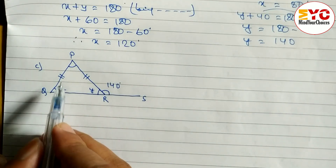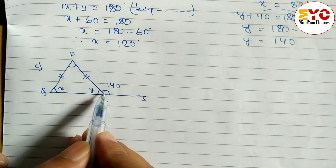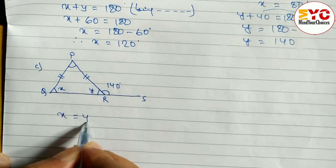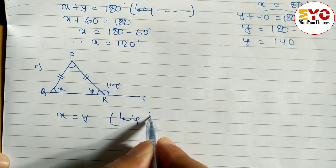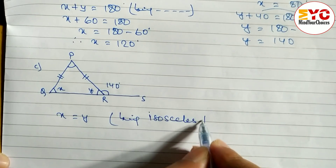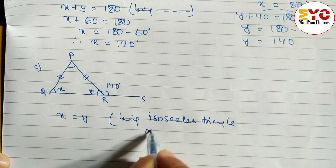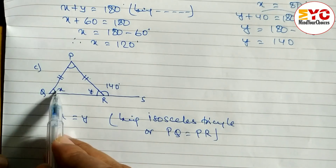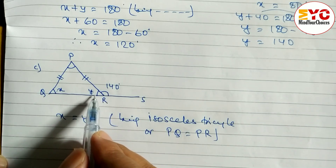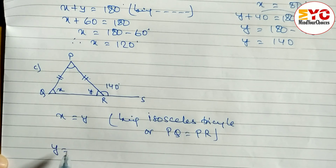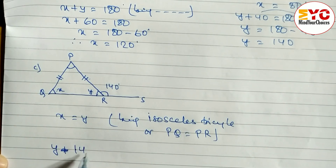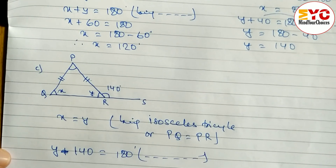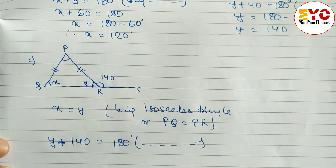Now look at the last question. Here you can see these two lines are equal — PQ and PR are equal — so this is an isosceles triangle. An isosceles triangle means the base angles are also equal, so we can write x equals y. Reason: being an isosceles triangle, or PQ equals PR. If two sides are equal, the base angles are also equal.